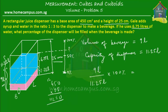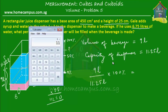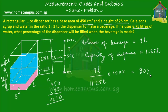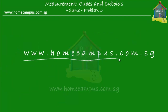So 9 divided by 11.25 times 100% — using a calculator — that is equal to 80%. So when the beverage is filled into the dispenser, 80% of the dispenser will be filled. What percentage of the dispenser will be filled when the beverage is made? 80% of the dispenser will be filled. That brings us to the end of this lesson. Please do go solve similar word problems, and visit www.homecampus.com.sg for practice problems and tests.